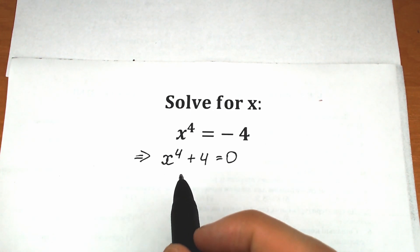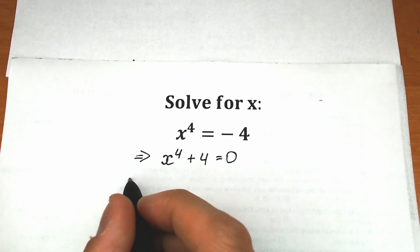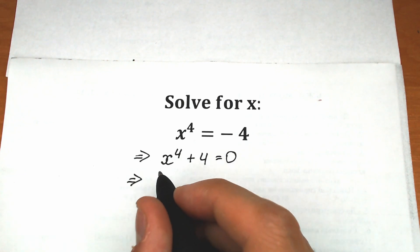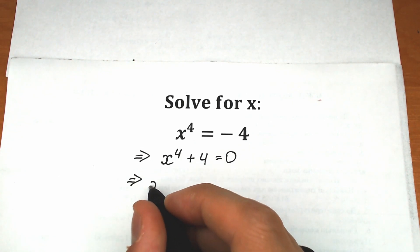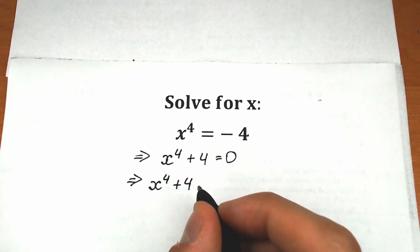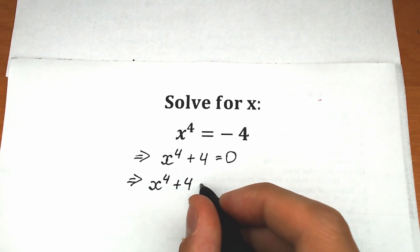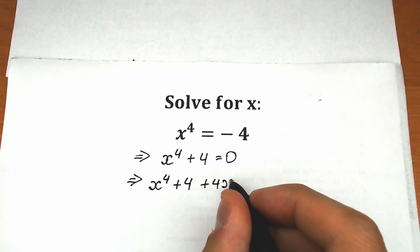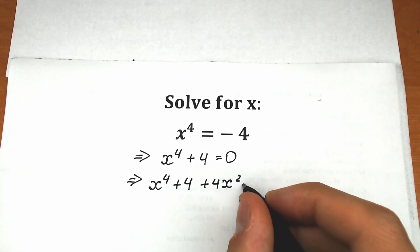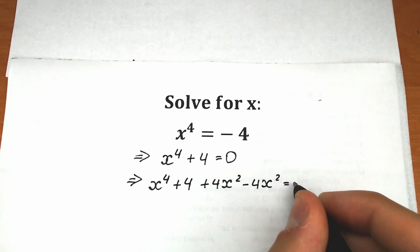Right now let's do a really interesting trick. Let's try to create a square. So we write x to the fourth power plus 4, and now let's add plus 4x squared to this expression.